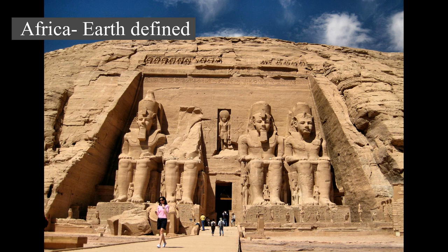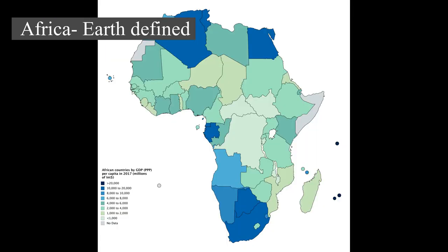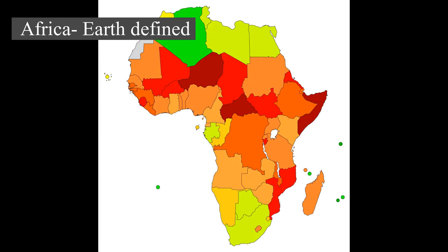Africa's population is the youngest amongst all the continents. The median age in 2012 was 19.7, when the worldwide median age was 30.4. Despite a wide range of natural resources, Africa is the least wealthy continent per capita and second least wealthy by total wealth, behind Oceania.